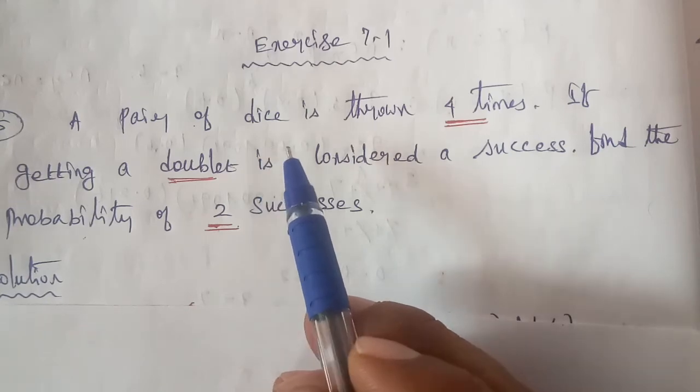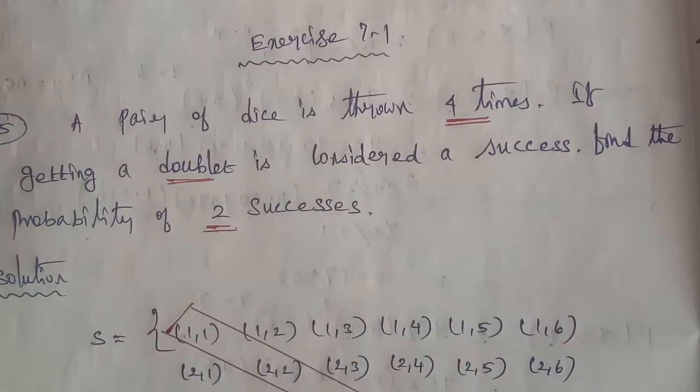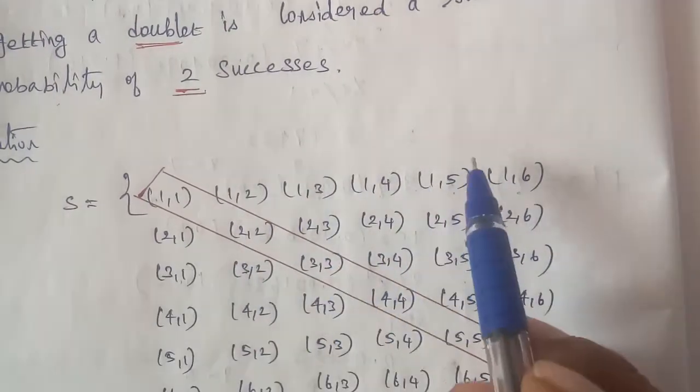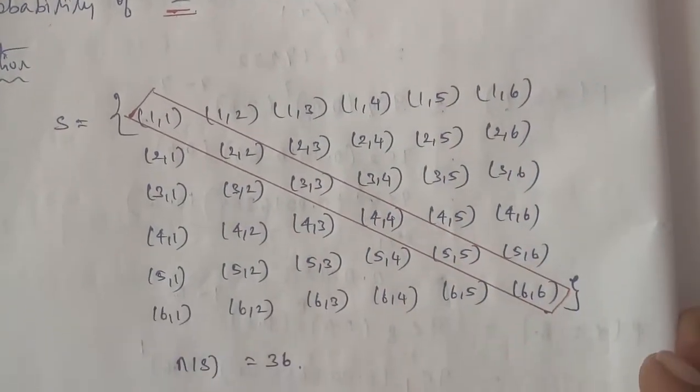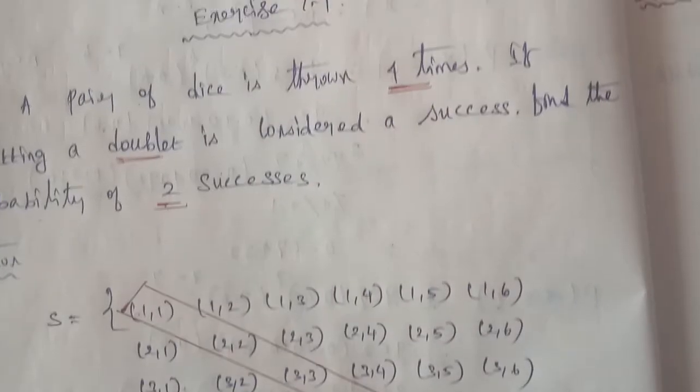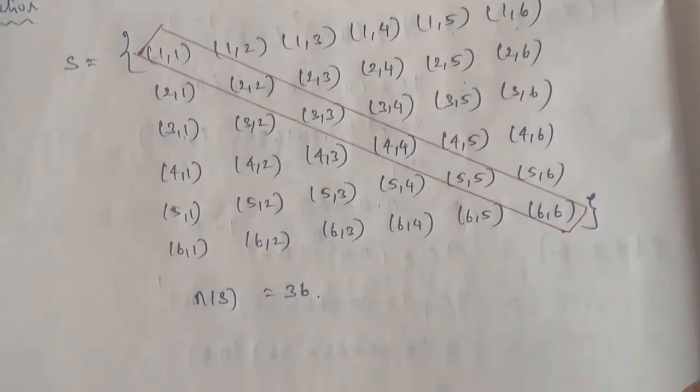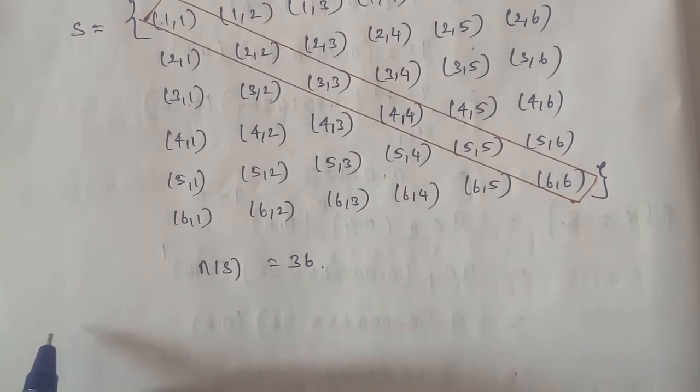That is (1,1), (1,2), (1,3), up to (6,6). So this is the pair of dice sample space. So n of sample space is equal to 36. Given four times thrown, therefore n is equal to 4.